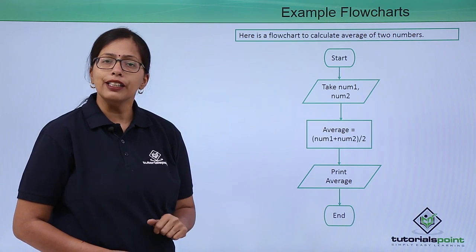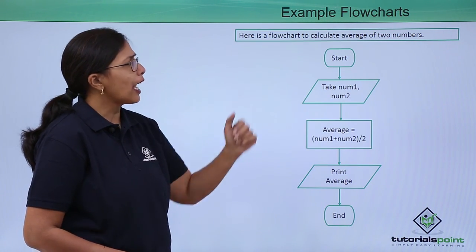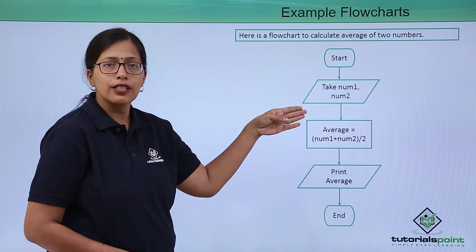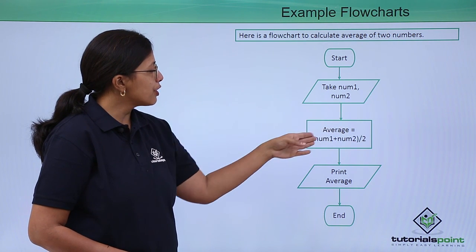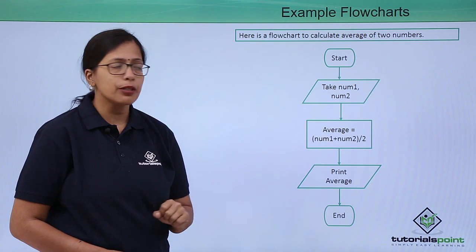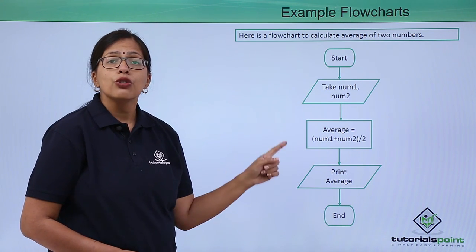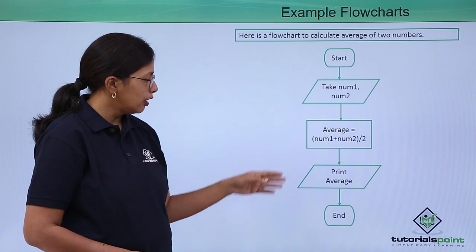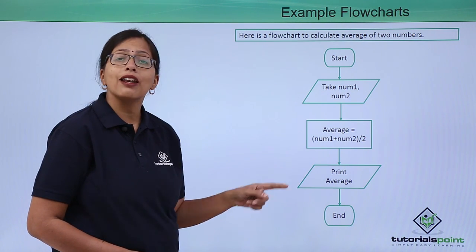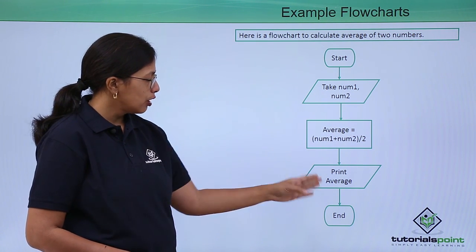Let's take another mathematical example: calculating the average of two numbers. Start, take input. You can see a parallelogram here. Average equals (num1 plus num2) divided by 2. Num1 and num2 are the two numbers. I am doing a calculation so I am using a rectangle. Print average. For input and output, parallelograms have to be used.